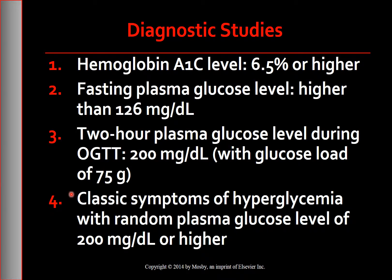In a patient with classic symptoms of hyperglycemia — which is polyuria, polydipsia, and unexplained weight loss — or hyperglycemic crisis, a random plasma blood glucose level of 200 mg per deciliter or higher.